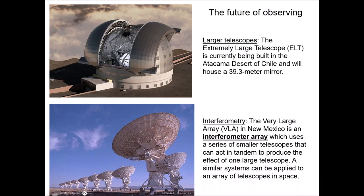The other direction is interferometer arrays. The VLA — Very Large Array — in New Mexico is a series of radio telescopes that collect signals from space simultaneously from different locations and combine those signals mathematically to produce an image equivalent to a much larger single telescope. The image of the black hole produced a few years ago in M87 was done with such an interferometer using a series of telescopes around the world. We'll probably see more interferometry arrays in space, and that's likely to be a big part of the future of astronomy.